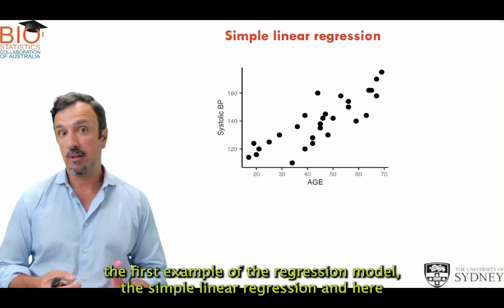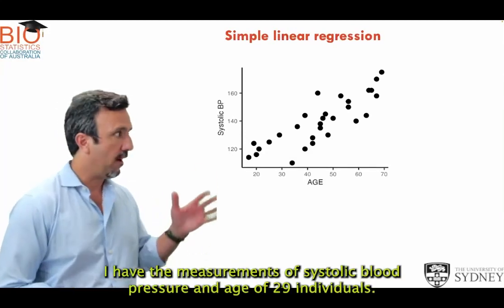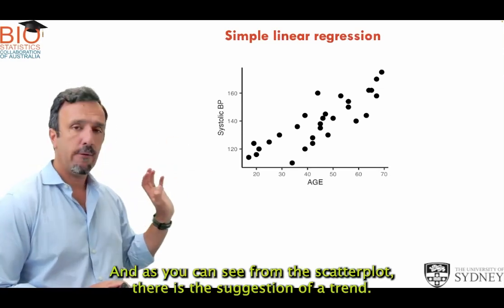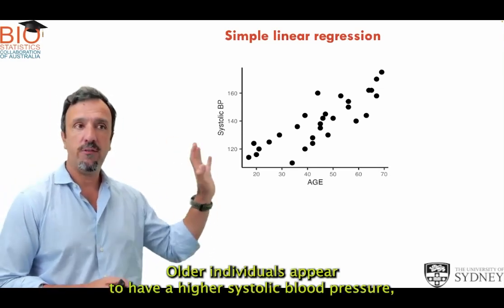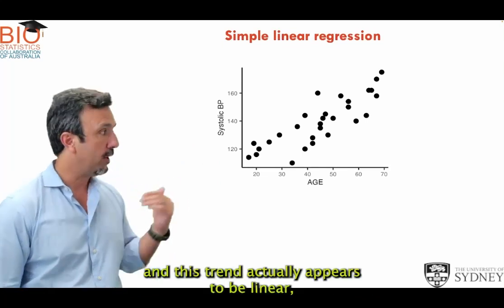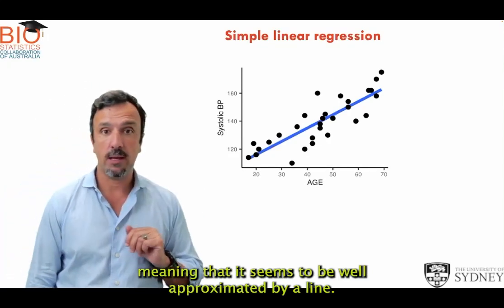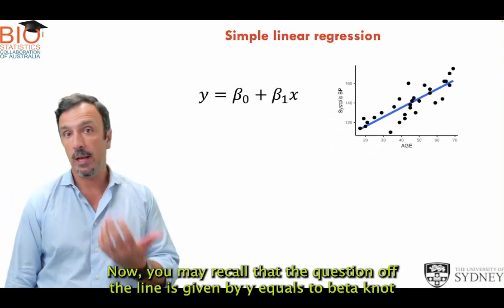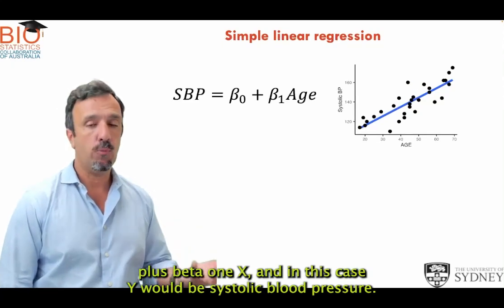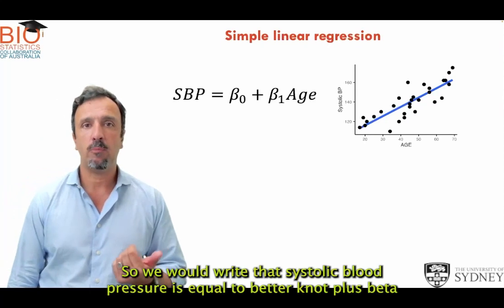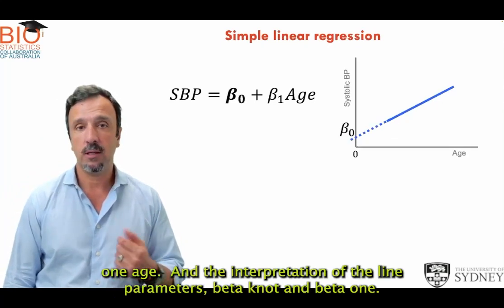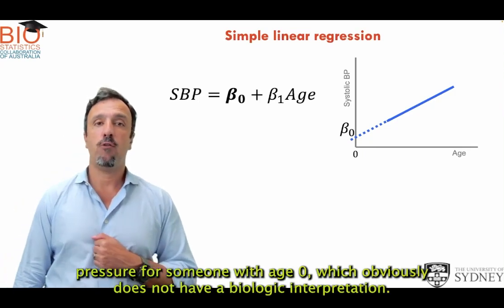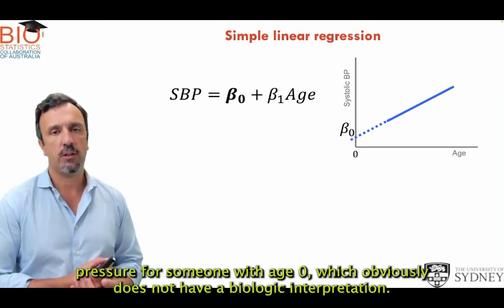We're going to see the first example of a regression model: the simple linear regression. Here we have measurements of systolic blood pressure and age for 29 individuals, and the scatter plot suggests a linear trend — older individuals appear to have higher systolic blood pressure. The equation of a line is y = β₀ + β₁x, so systolic blood pressure equals β₀ + β₁ × age. β₀ is the intercept — the systolic blood pressure at age zero — which obviously does not have a biological interpretation.